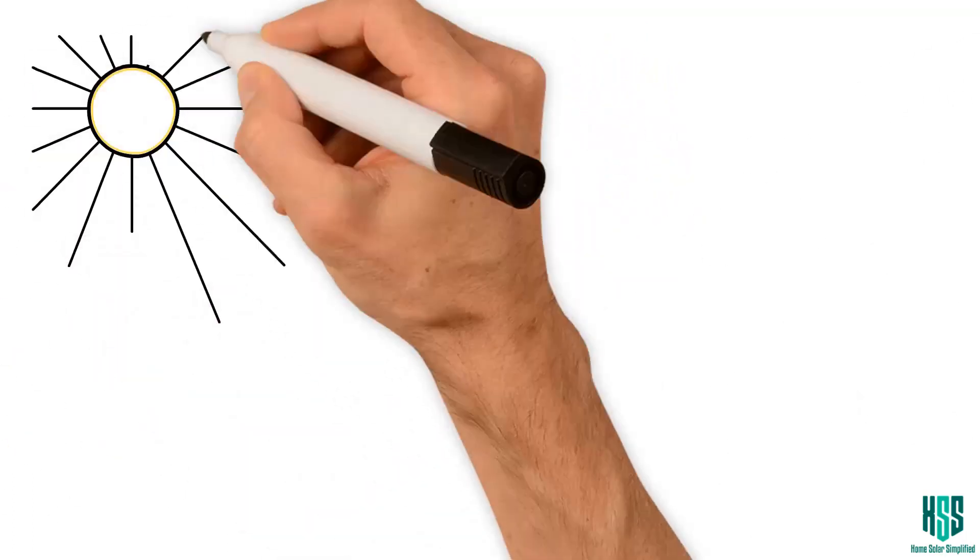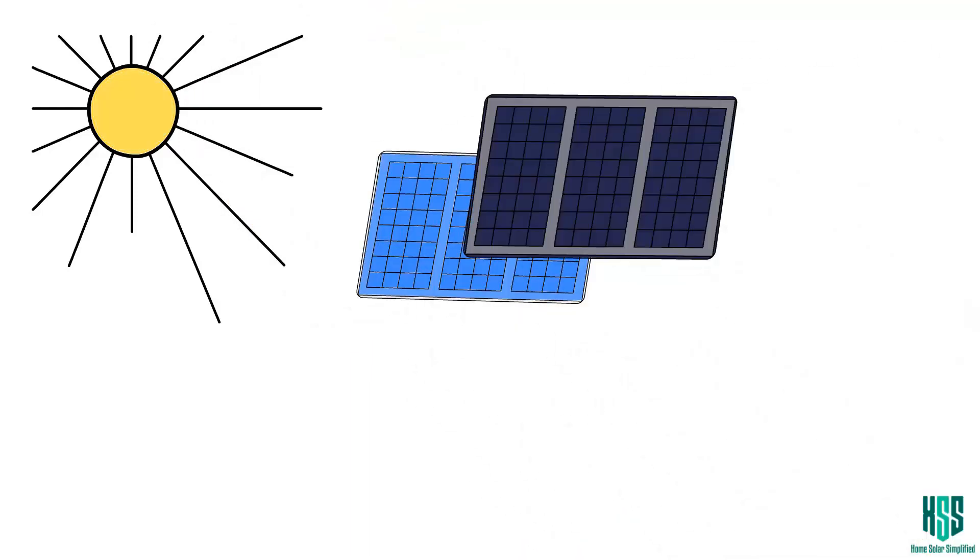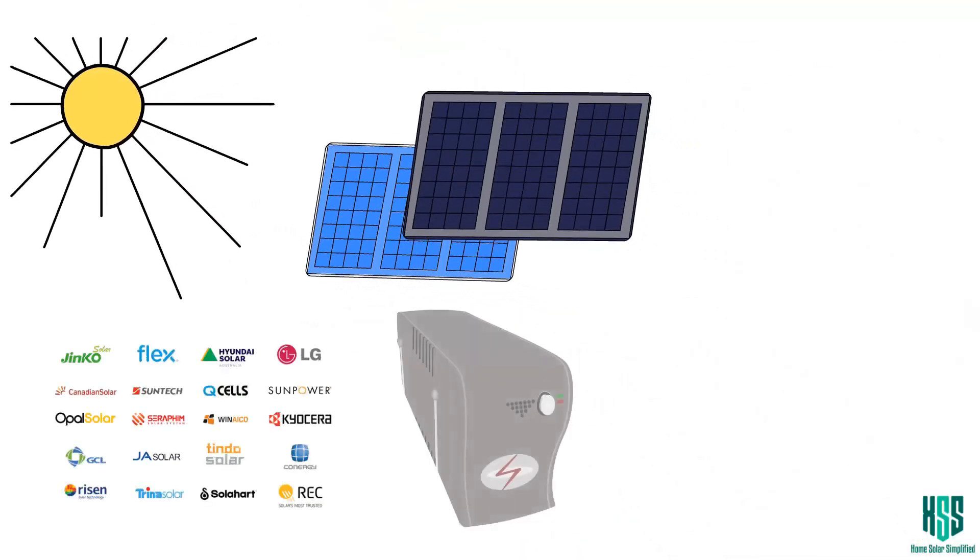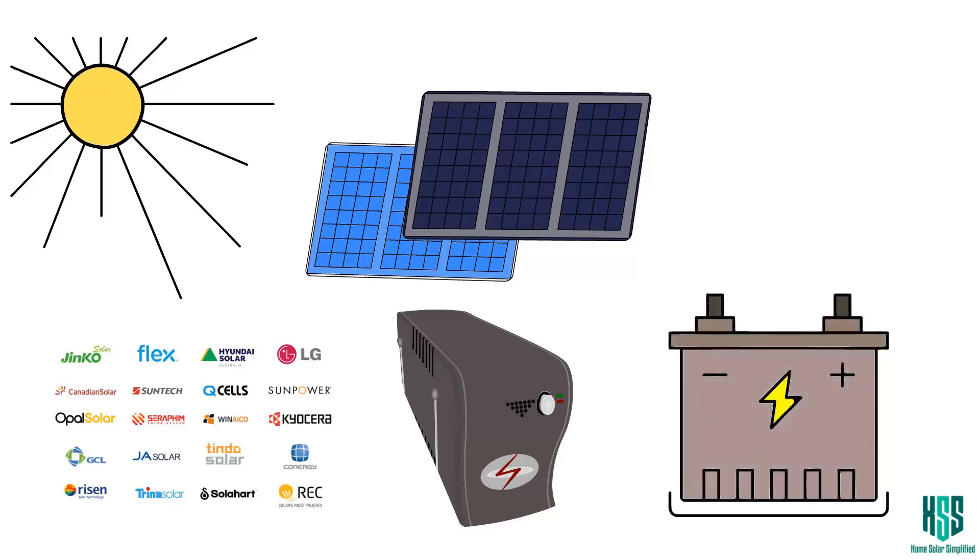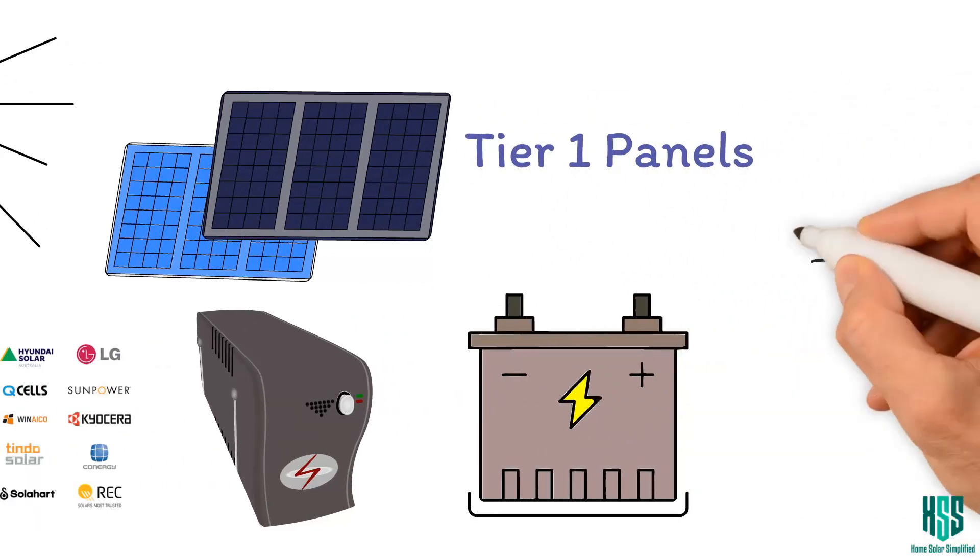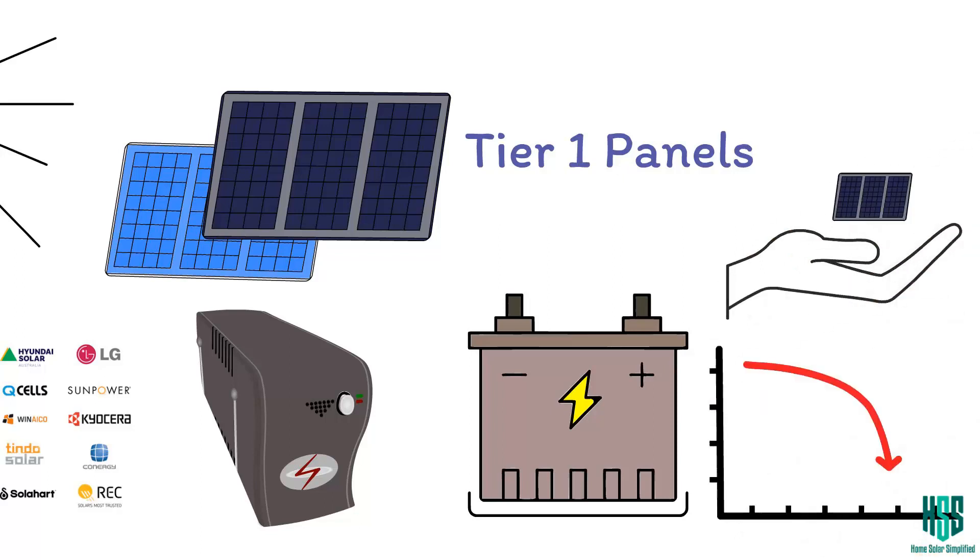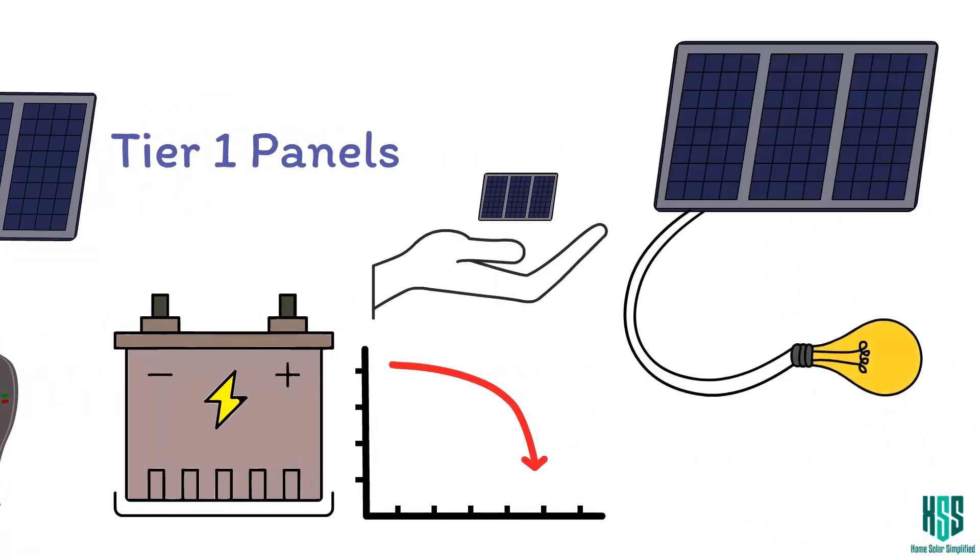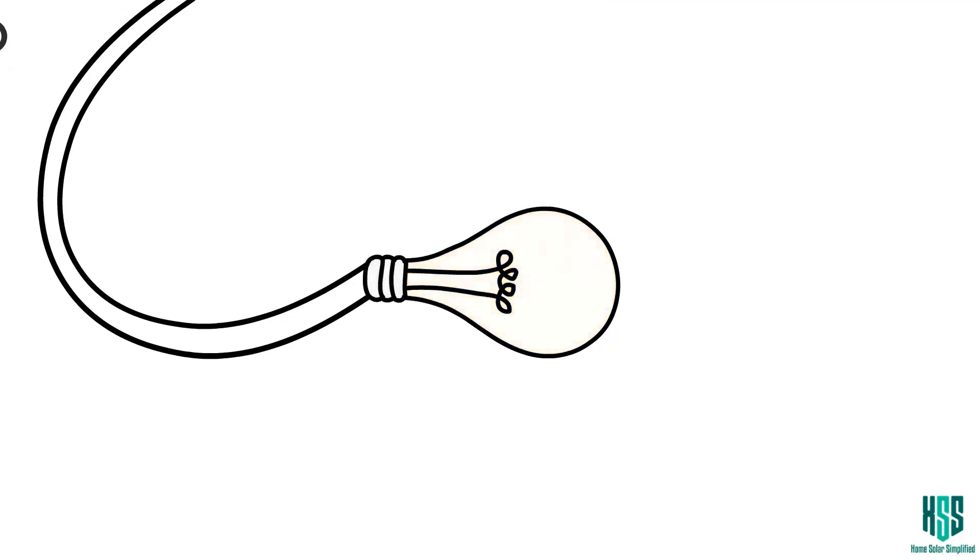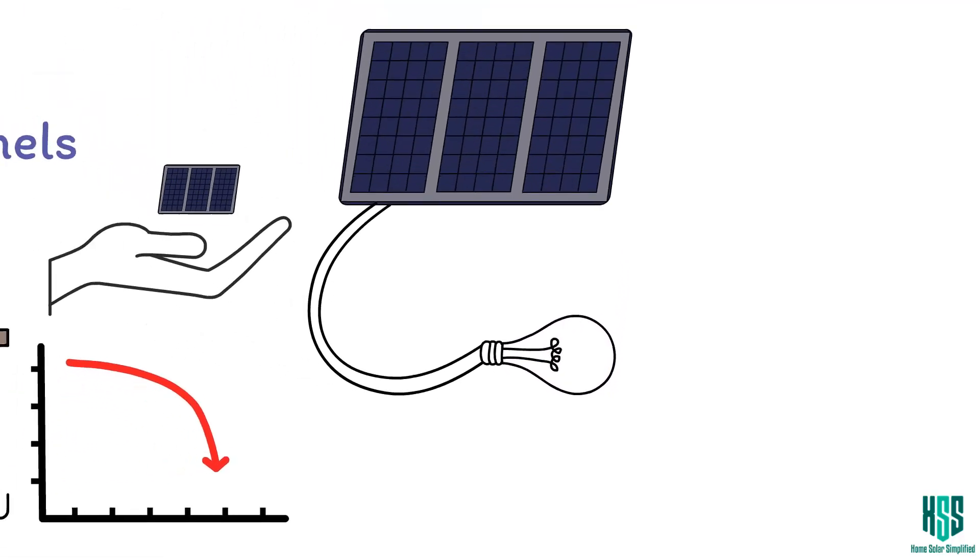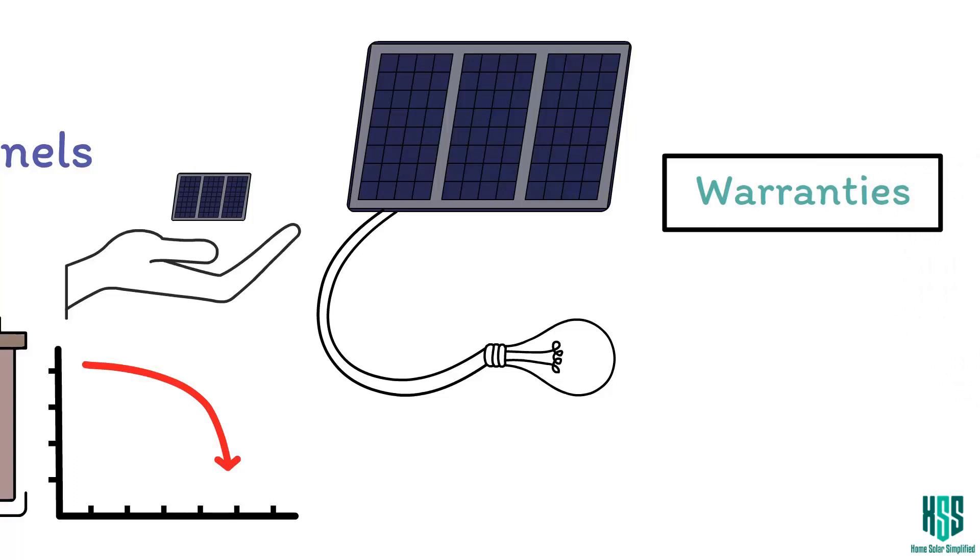Now, let's zoom in on the star of the show, those solar panels. Get to know the brands, inverters, batteries, all that jazz. Aim for tier one panels and keep an eye out for efficiency and degradation. Remember, solar panel degradation is just a fancy way of saying panels lose some efficiency over time. Don't forget about warranties, not just for the panels, but also for those inverters and workmanship.